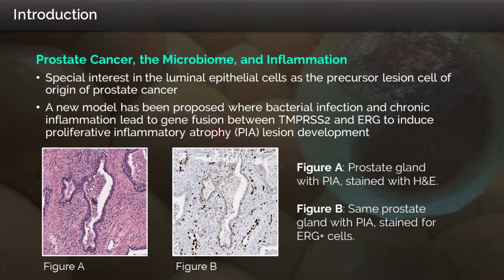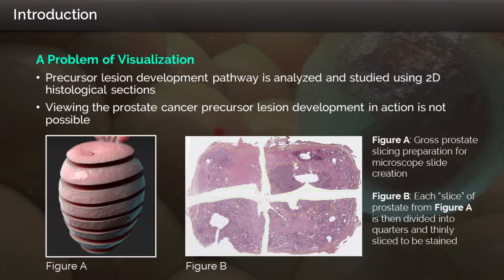Prostate cancer is one of the most common cancers among men. Luminal epithelial cells have been regarded as the cell of origin of prostate cancer. Recent evidence suggests that prostate cancer may be attributed to both bacterial infection and chronic inflammation, which can lead to gene fusion events between TMPRSS2, a normally expressed transmembrane protease serine 2 gene, and ERG, the Erythroblastosis virus E26 oncogene homolog, a gene that codes for an oncoprotein. In about 50% of prostate cancer cases, the ERG gene is fused with TMPRSS2, causing cells to express ERG and potentially leading to lesions known as proliferative inflammatory atrophy. Specifically staining for ERG allows us to appreciate the production and presence of this oncoprotein, which strongly supports this hypothesis.